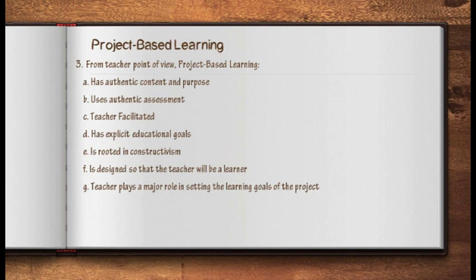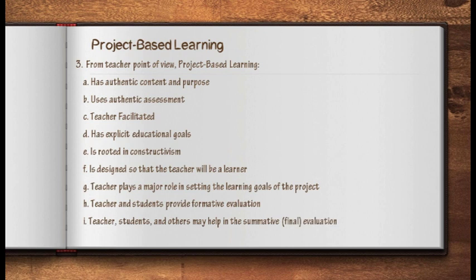The teacher plays a major role in setting the learning goals of the project. Both teacher and student provide formative evaluation — which is sometimes referred to as internal evaluation; it is a method for judging the worth of a program while the program activities are in progress. Teachers, students, and others may help in summative or final evaluation, so there should be collaboration. Rubrics are created by a combination of teachers and students to facilitate self-evaluation, peer evaluation, evaluation by the teacher, and evaluation by outside experts.